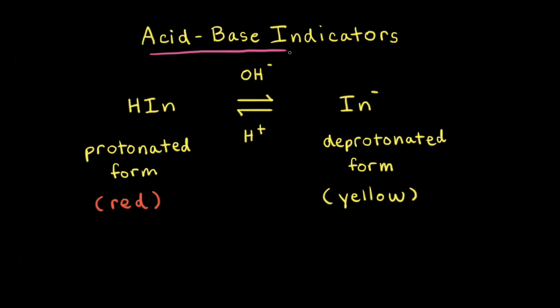Acid-base indicators are used in titrations to determine when the equivalence point is reached.